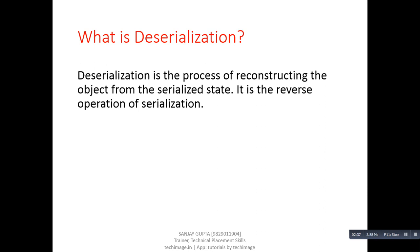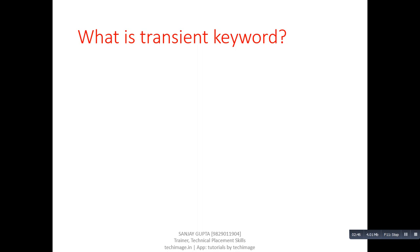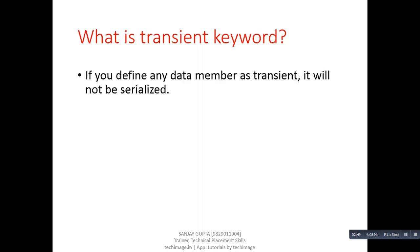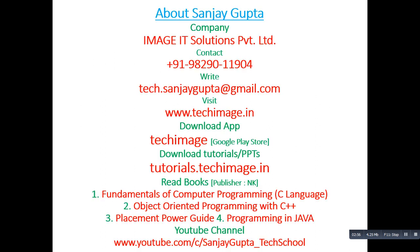Next question: what is deserialization? Answer: Deserialization is the process of reconstructing the object from the serialized state. It is the reverse operation of serialization. Next question: what is the transient keyword? Answer: If you define any data member as transient, it will not be serialized.